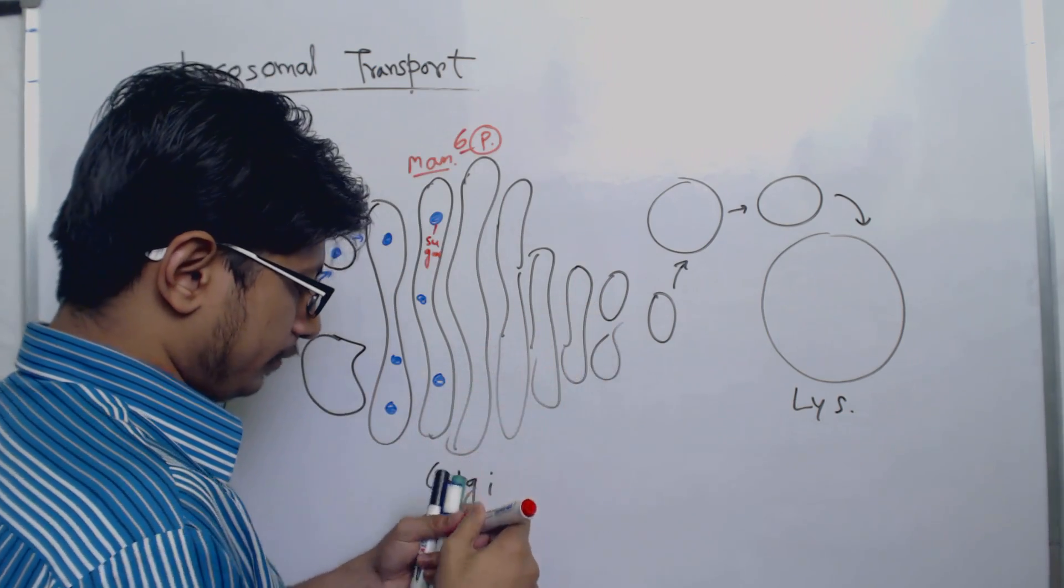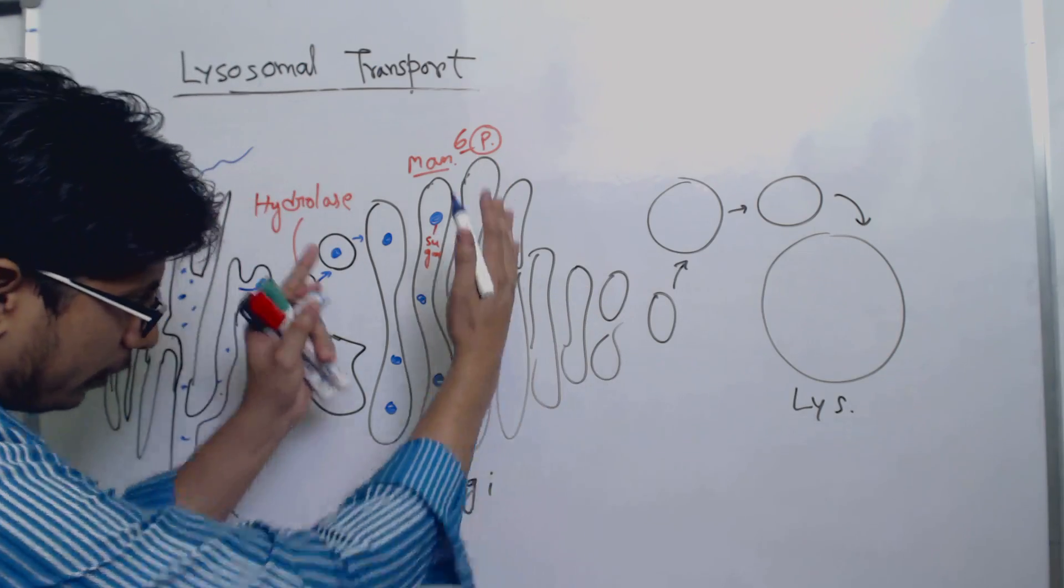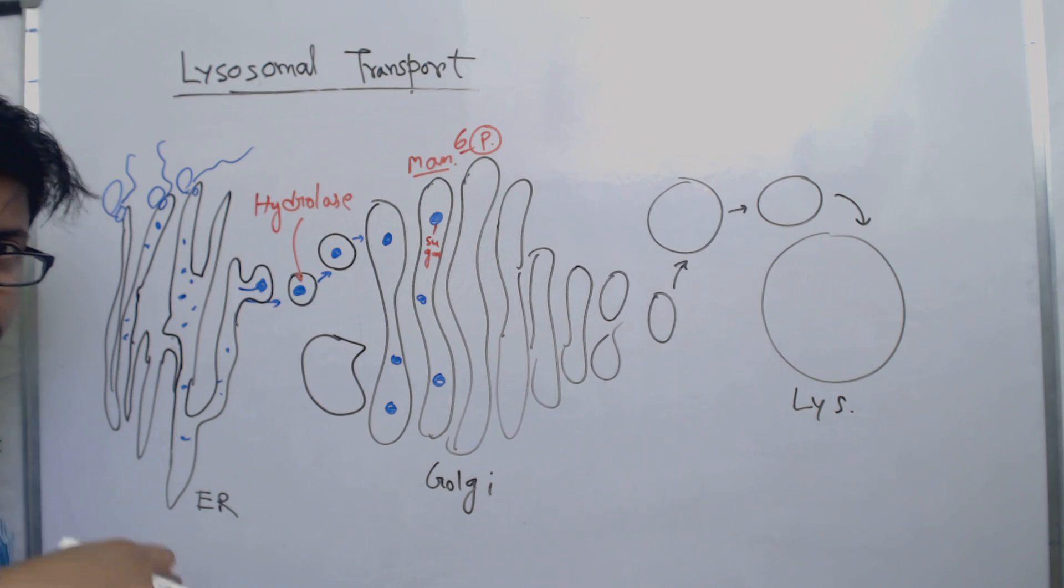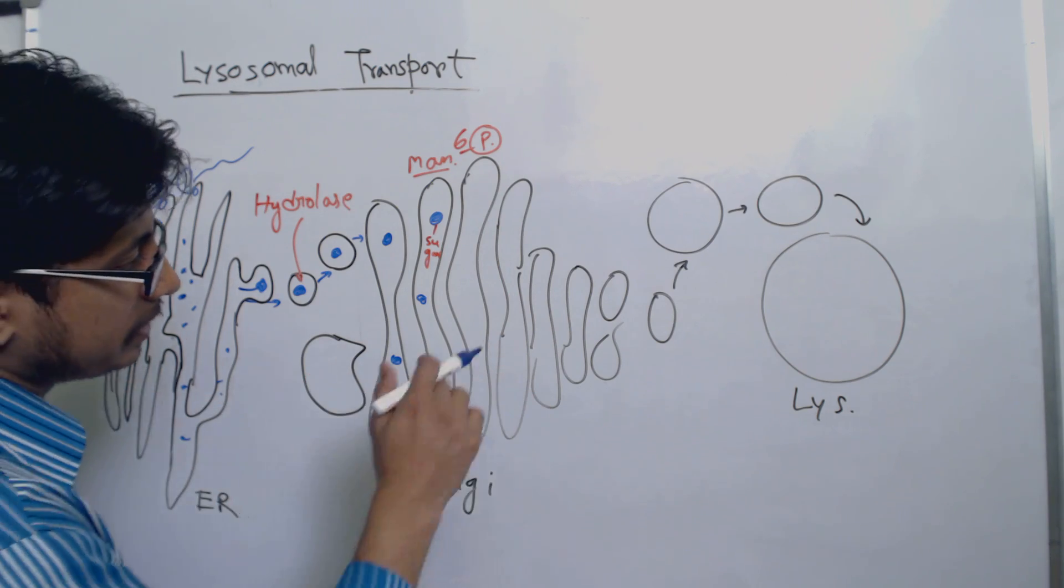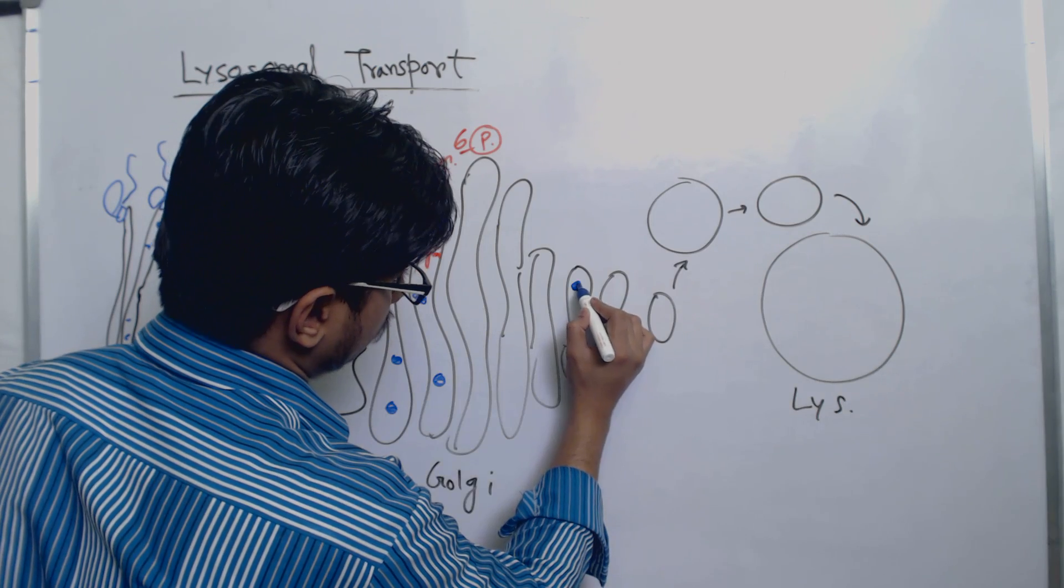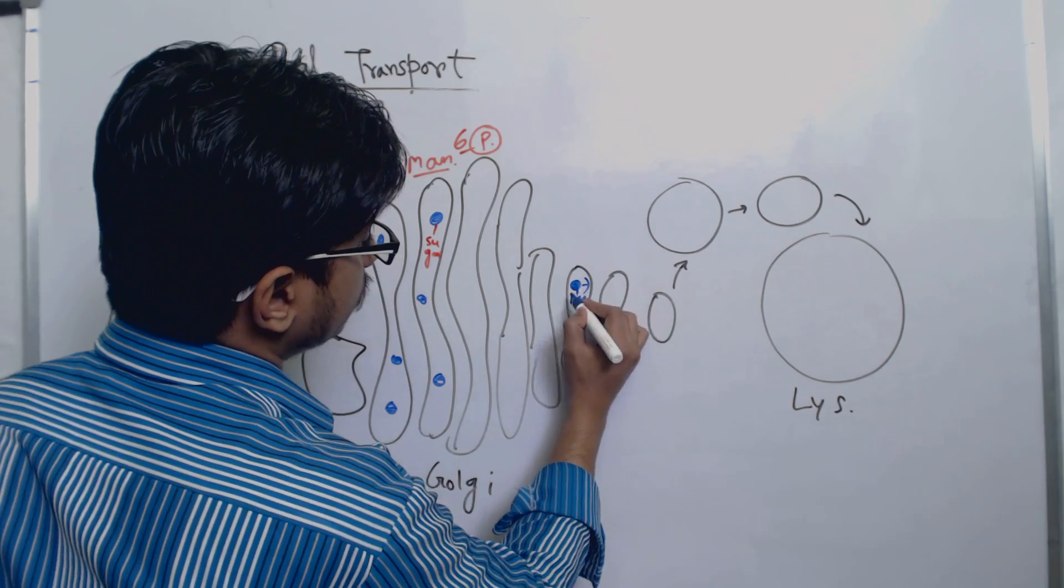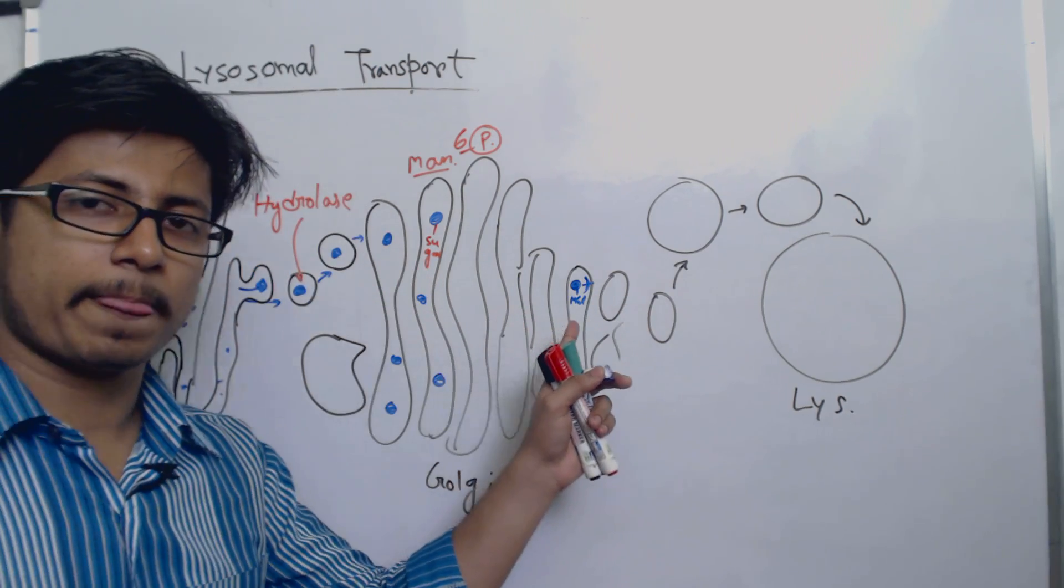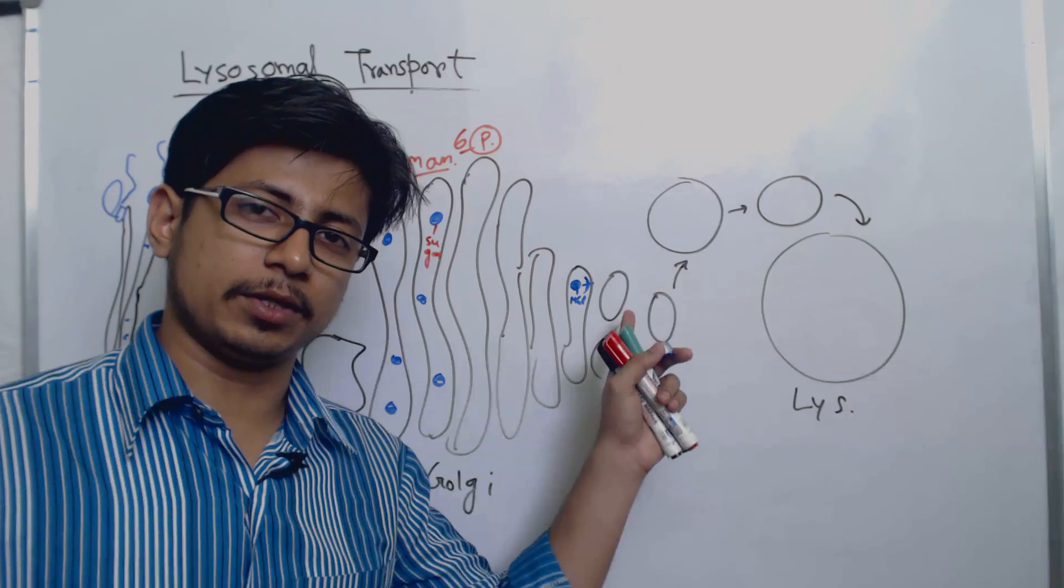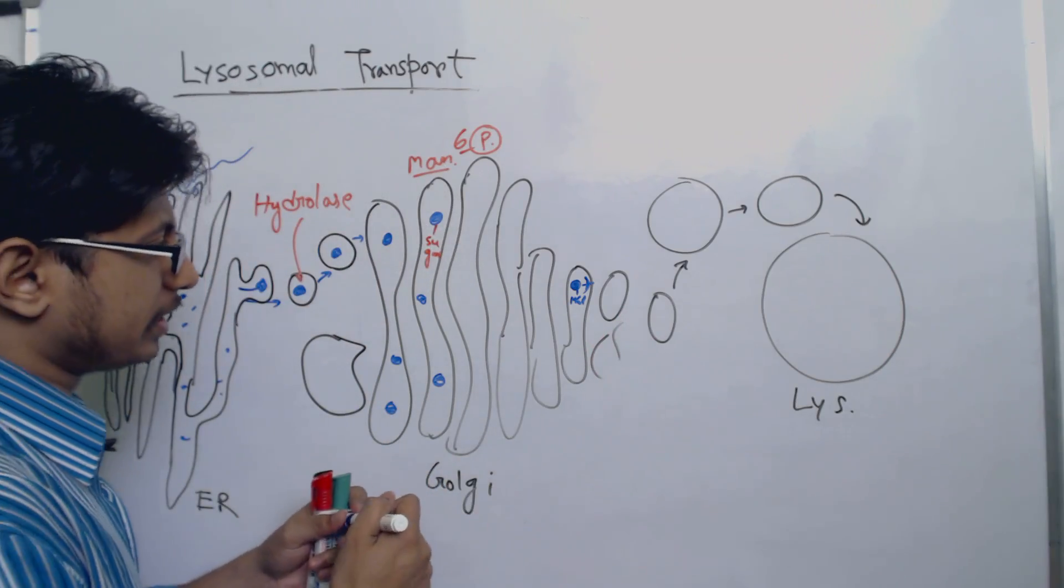Now once mannose 6-phosphate is formed, that same protein moves towards the terminal part of the Golgi. If you look at the Golgi, there are cis, medial and trans. So once it's there at the end, the hydrolase with mannose 6-phosphate binds to the mannose 6-phosphate receptor that is also present in the Golgi apparatus membranes, embedded in the membrane.